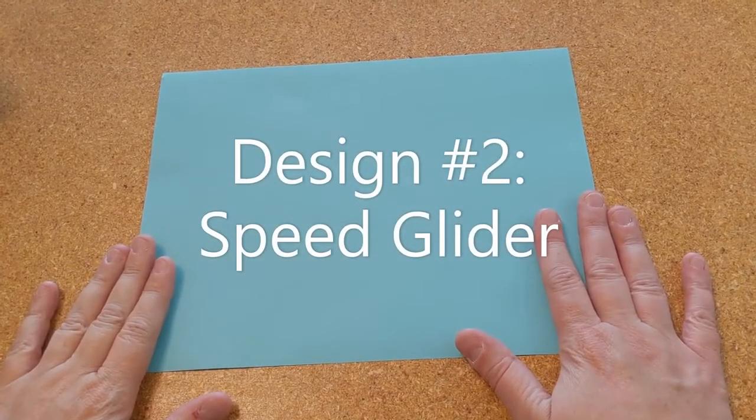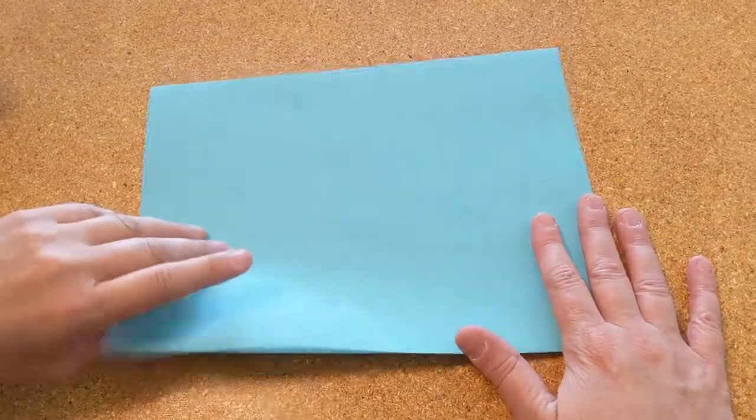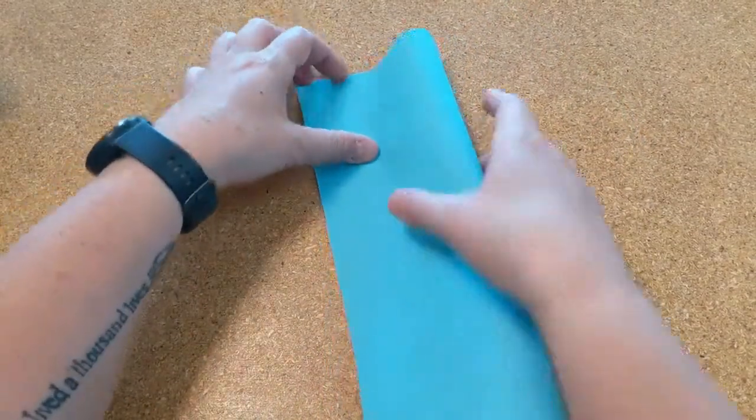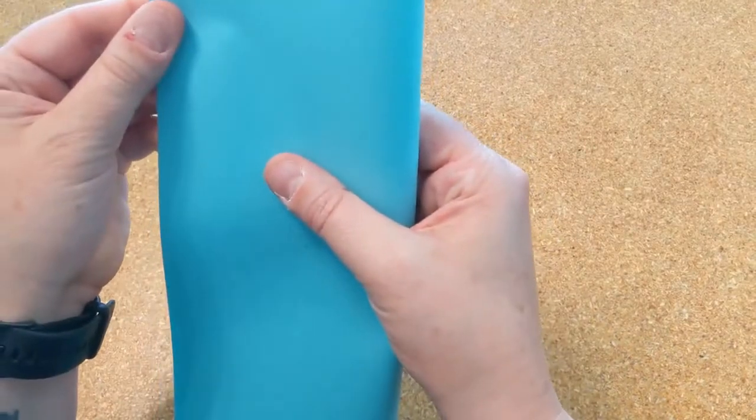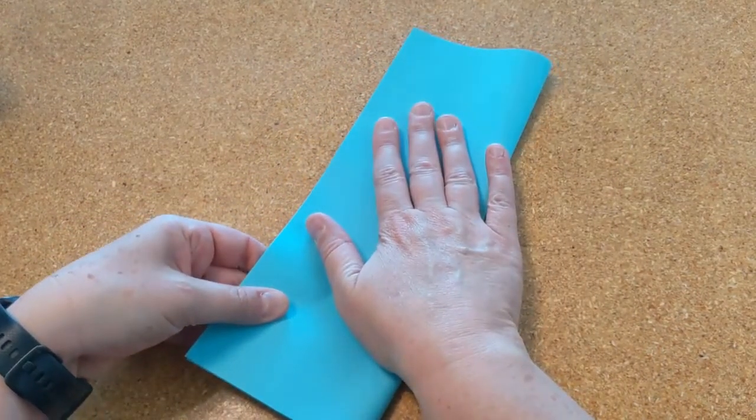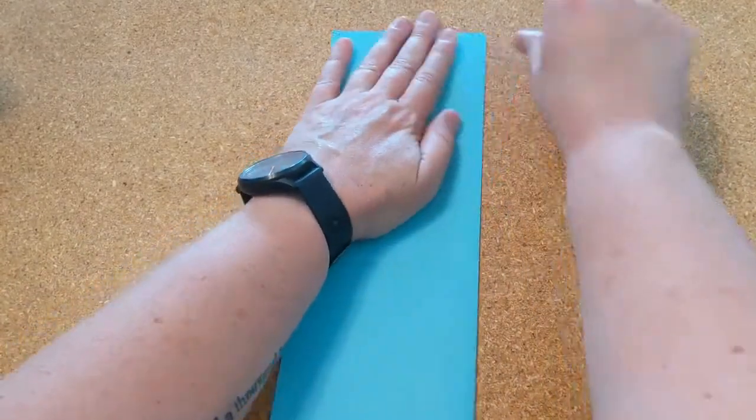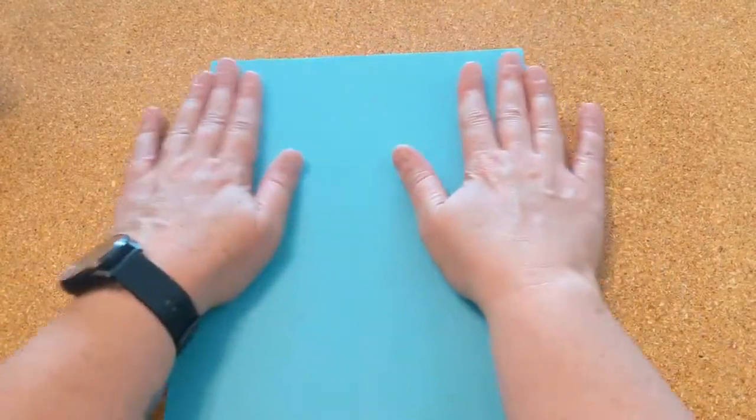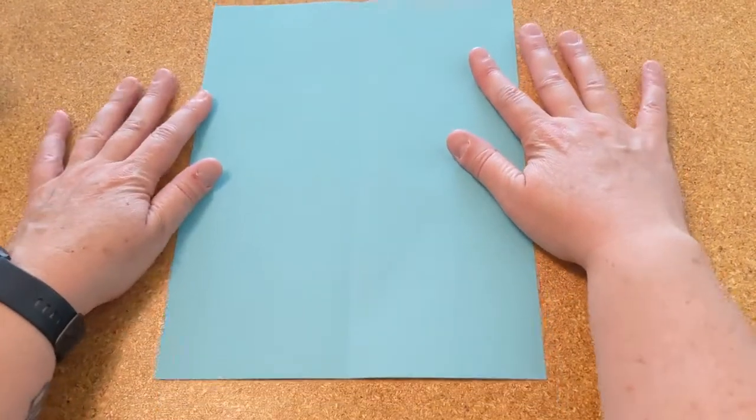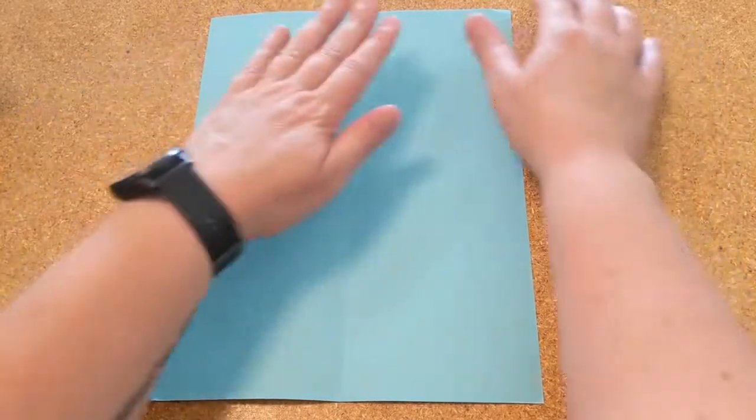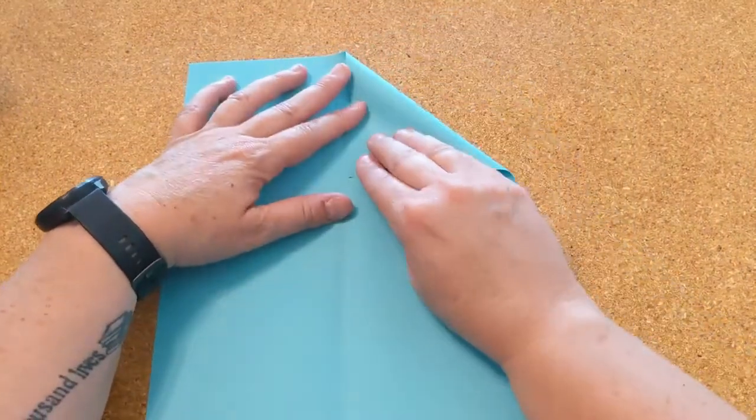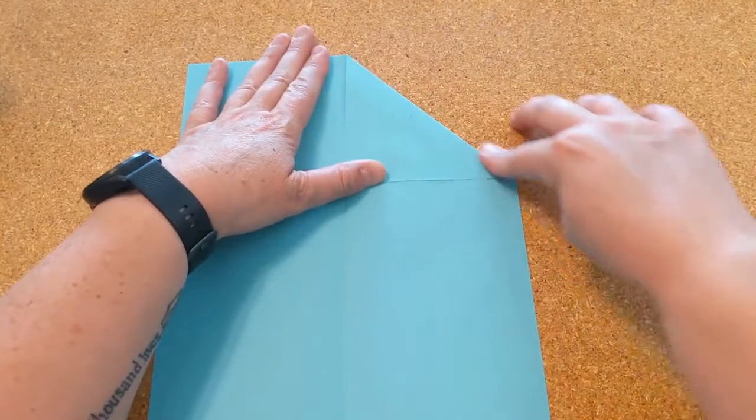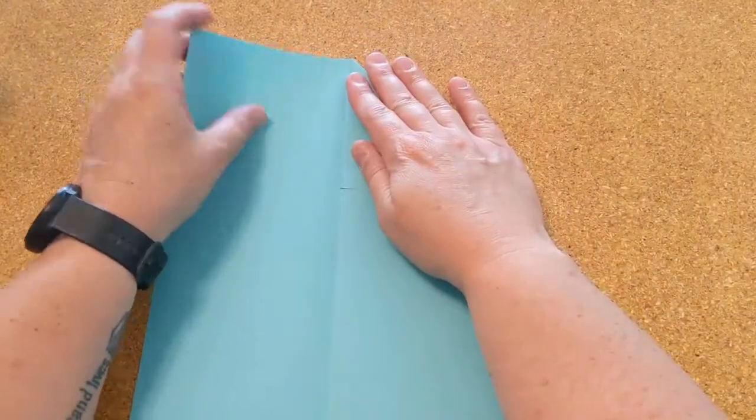For the speed glider plane you're going to start by folding your paper in half hot dog style. Make sure you line up the corners. Next you'll open it back up and lay it portrait style. Then you're going to fold the top right corner down to the center crease creating a triangle, and then you will do the same thing with the left side.